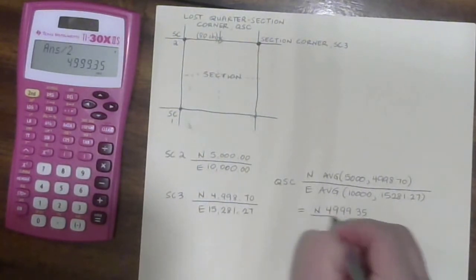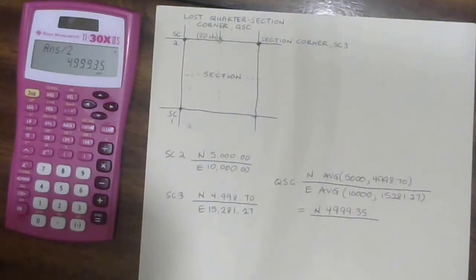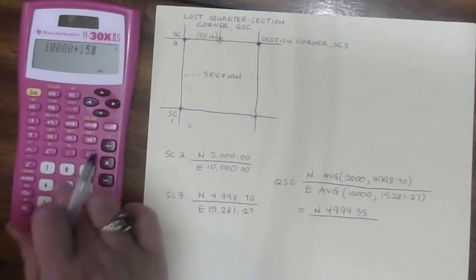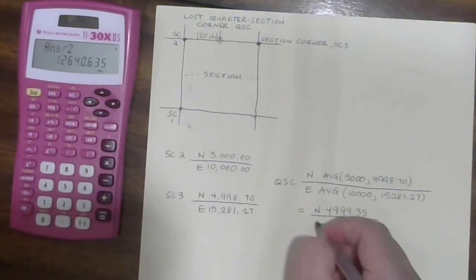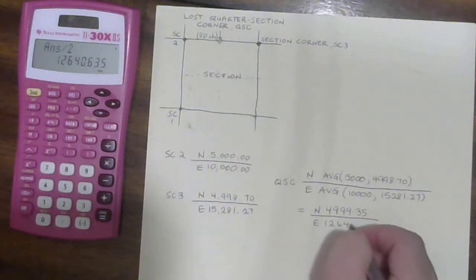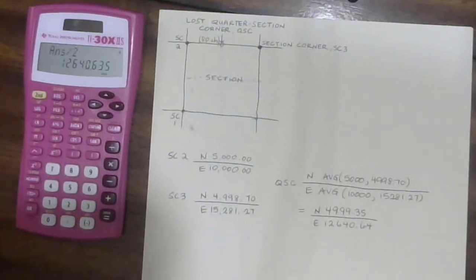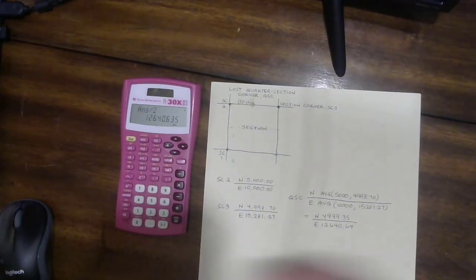4,999.35 and an easting of 12,640.64. That's it.